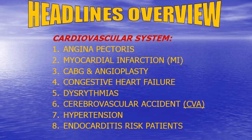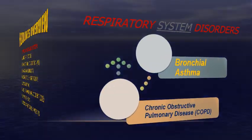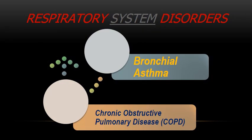Under cardiovascular system disorders, we will discuss angina pectoris, myocardial infarction, coronary artery bypass graft (CABG) and angioplasty, congestive heart failure, cardiac dysrhythmias, cerebrovascular accident, hypertension, and endocarditis risk patients. For respiratory system disorders, we will discuss two main topics: bronchial asthma and chronic obstructive pulmonary disease (COPD).